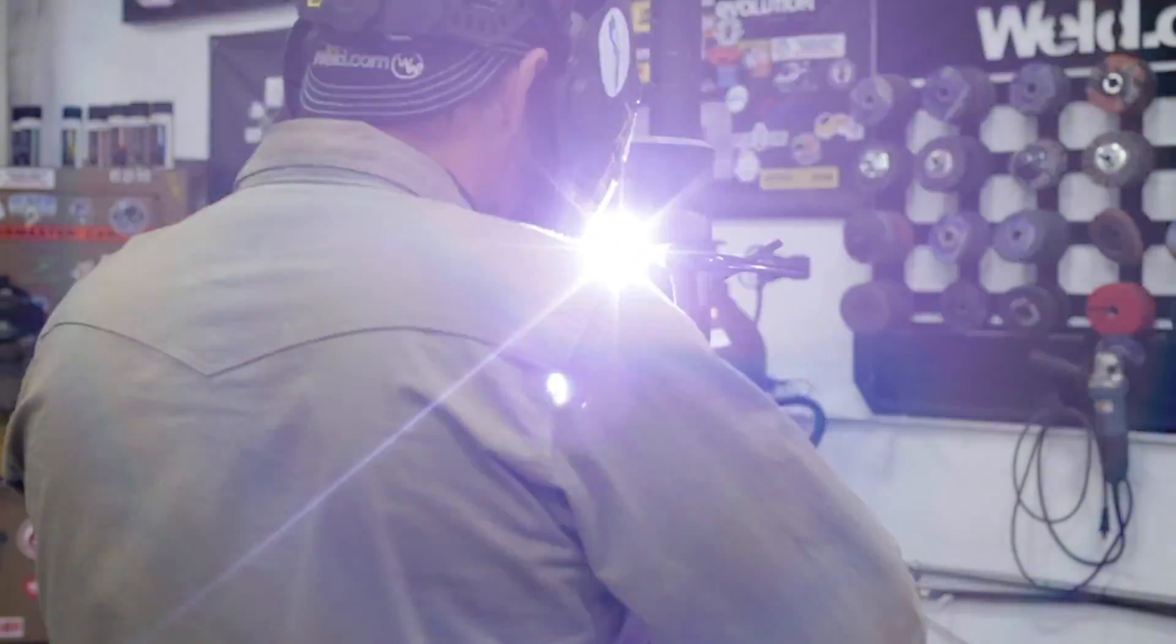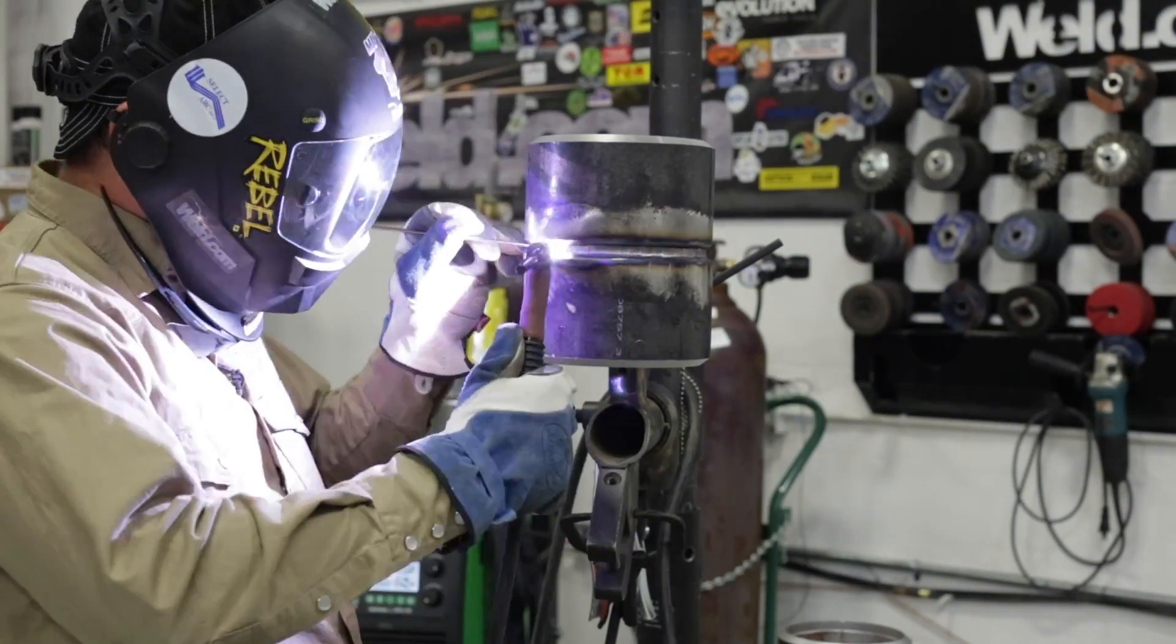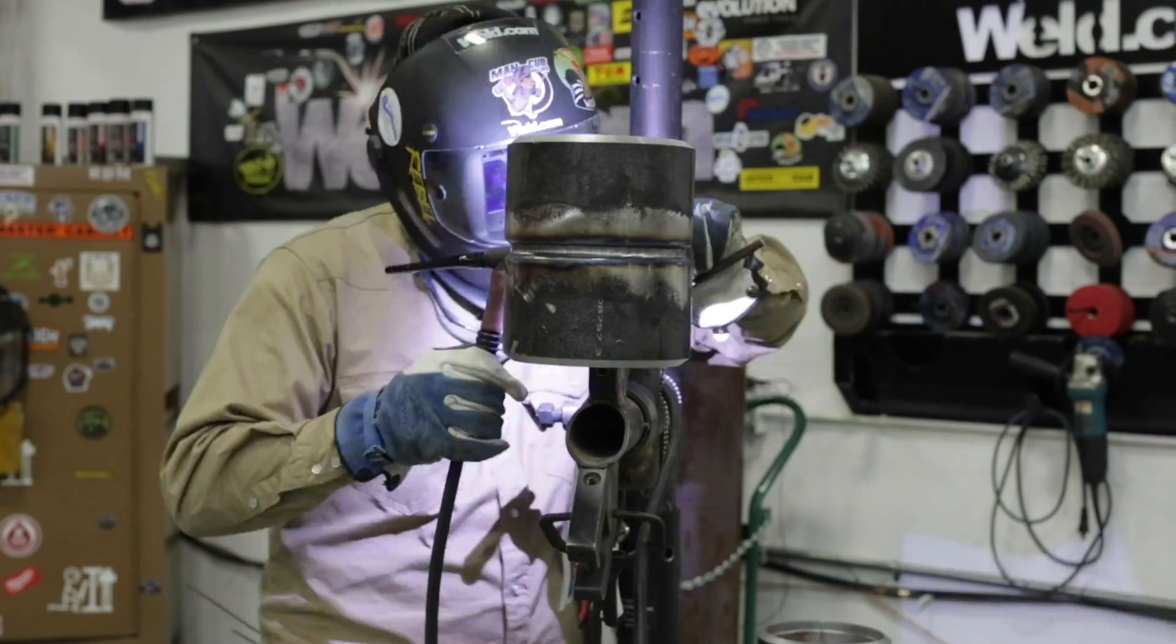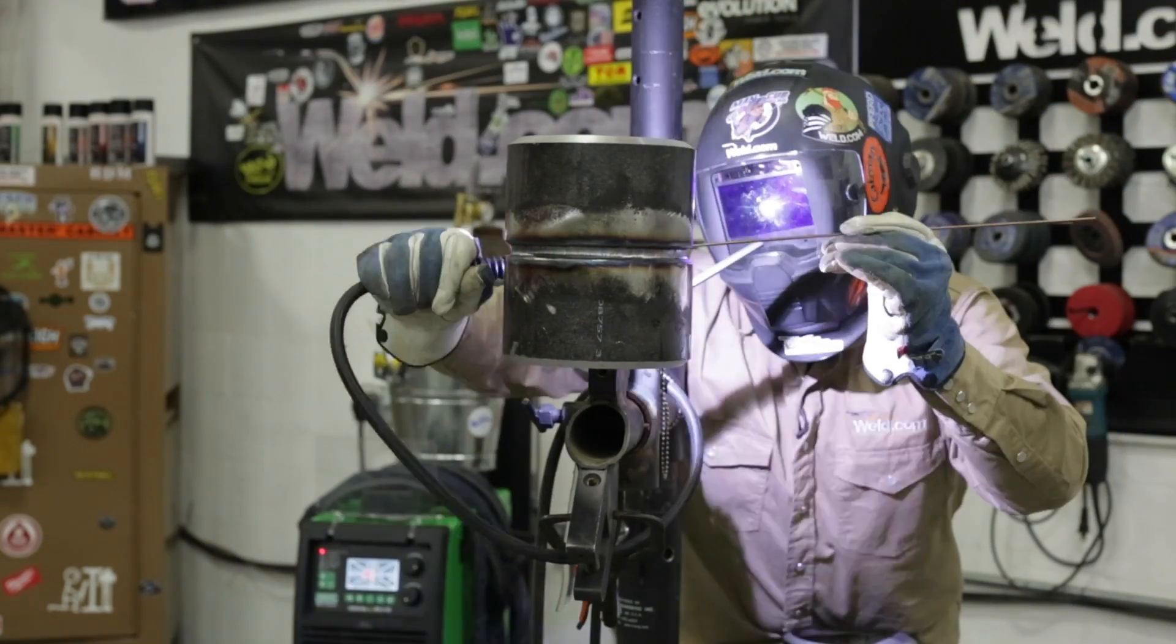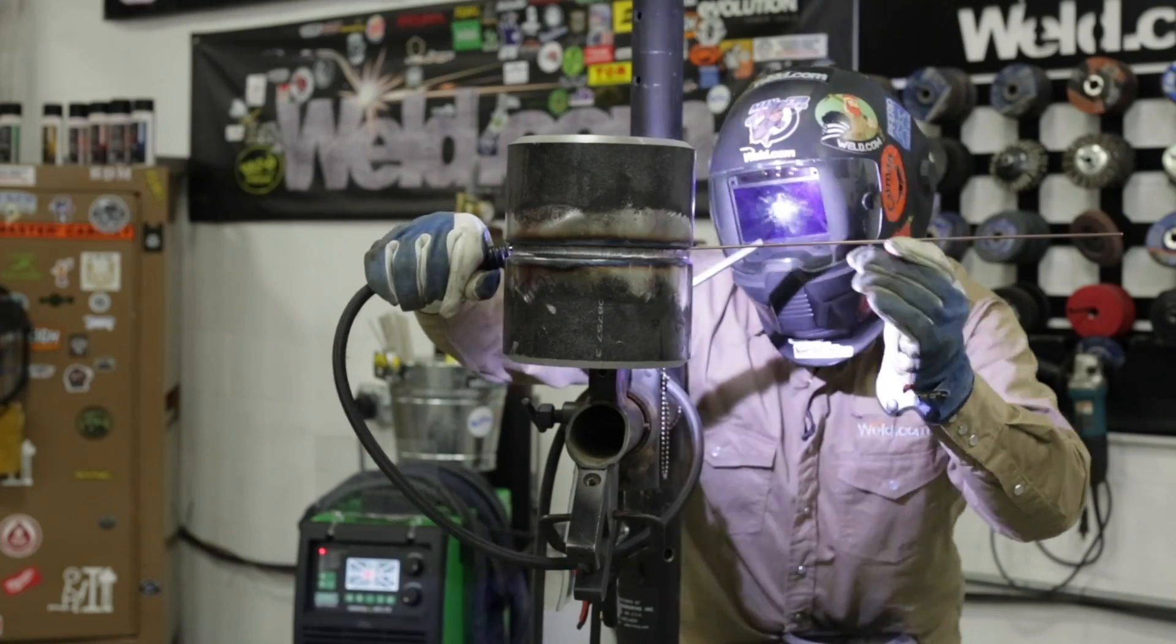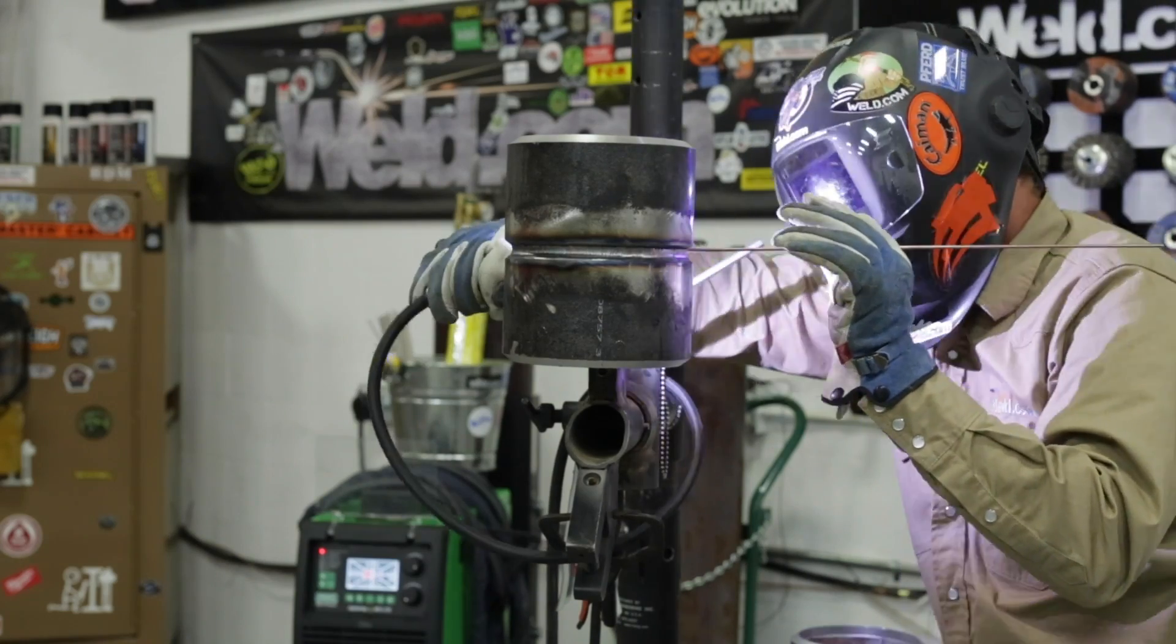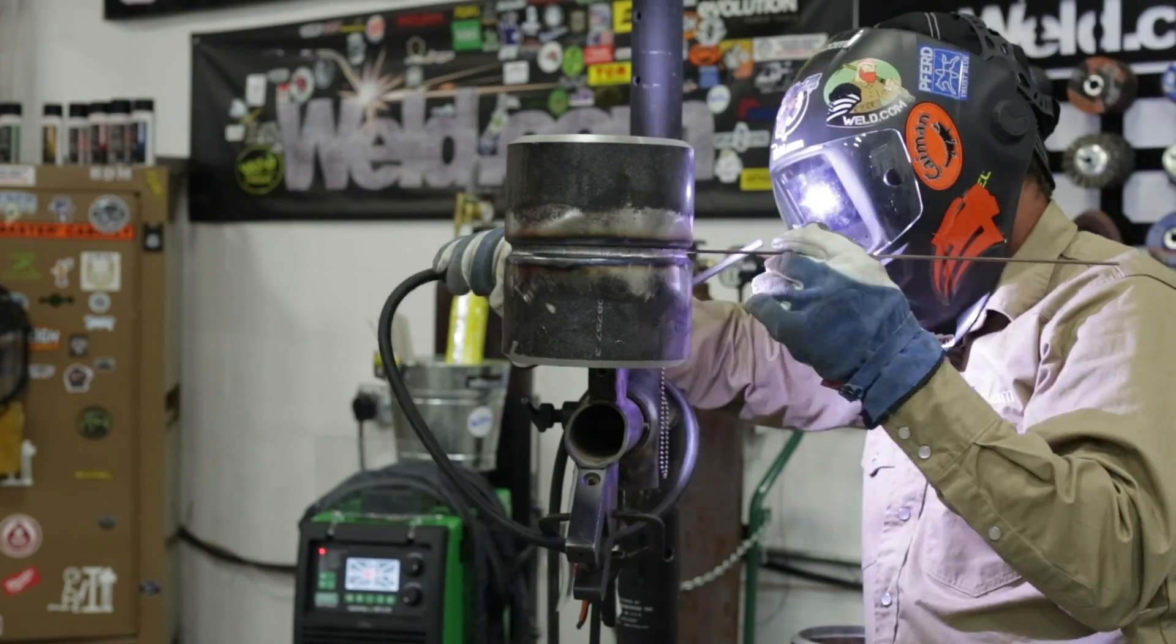Hey guys, welcome back to weld.com. Today I'm going to take you through a 2G open root test here. We're going to be doing a TIG root and TIG hot pass. Then I'm going to jump over to 7018 all the way out to the cap. We're going to be doing a carbon steel 6 inch Schedule 80 coupon. I'm going to take you through the steps right now. Let's get to it.